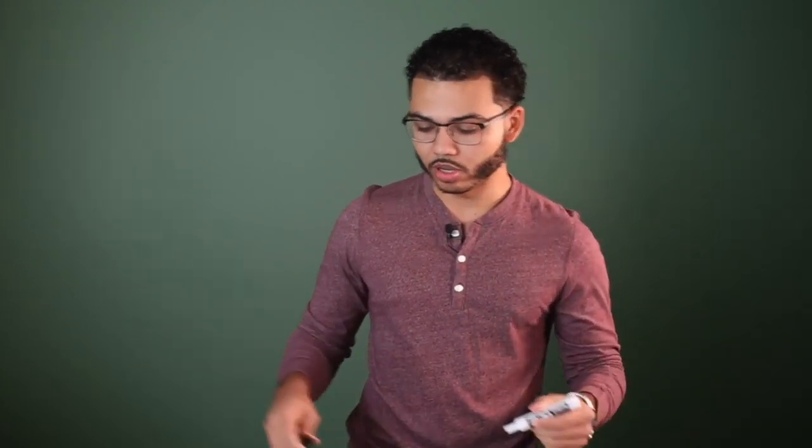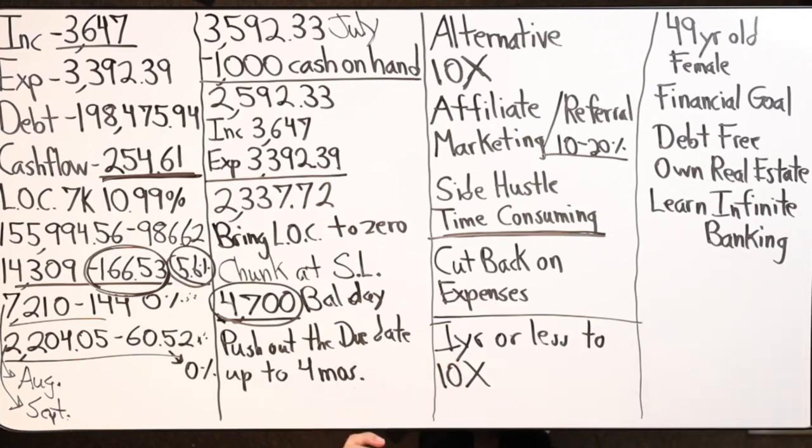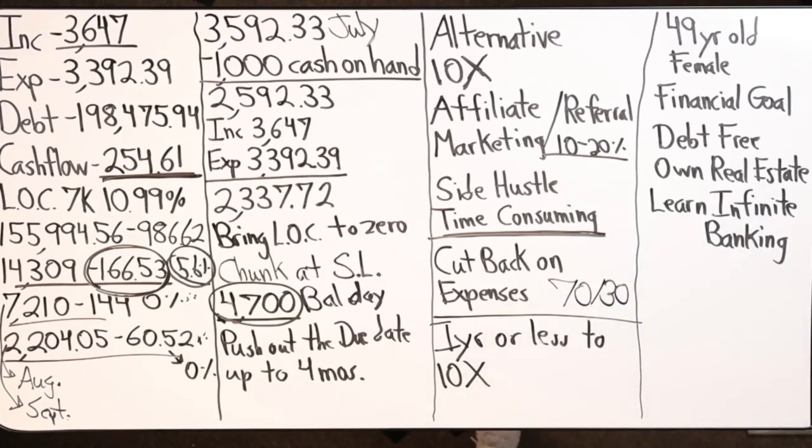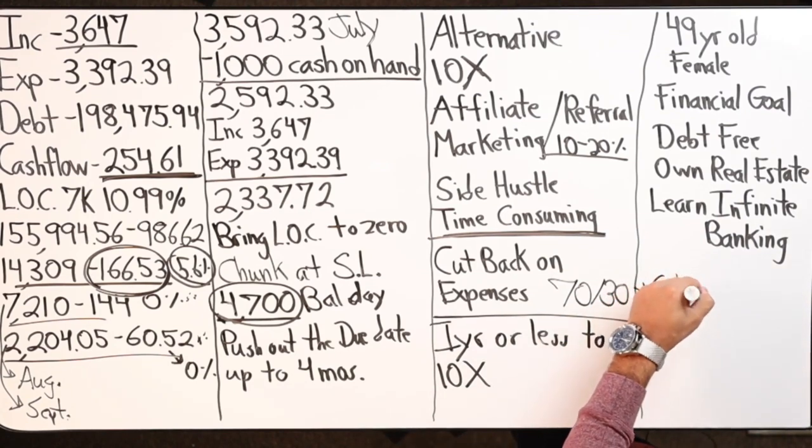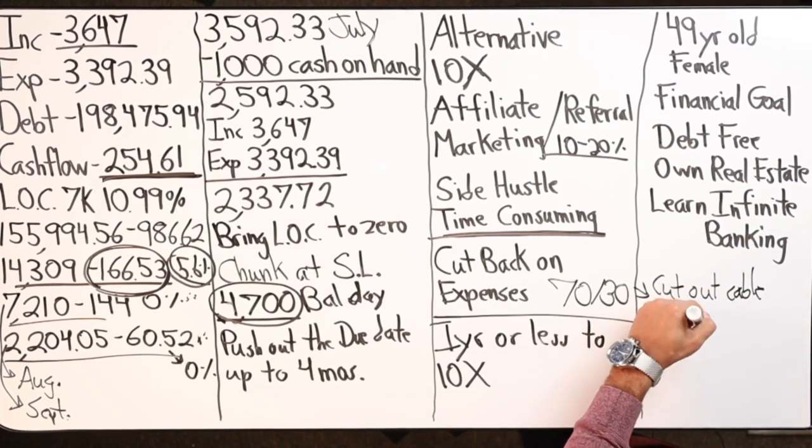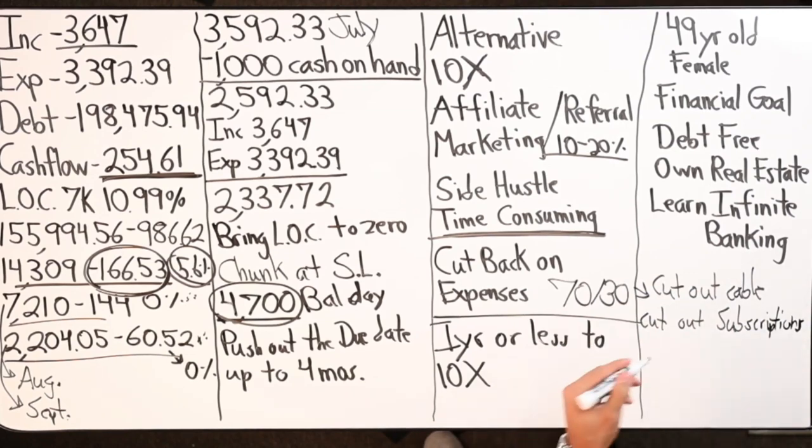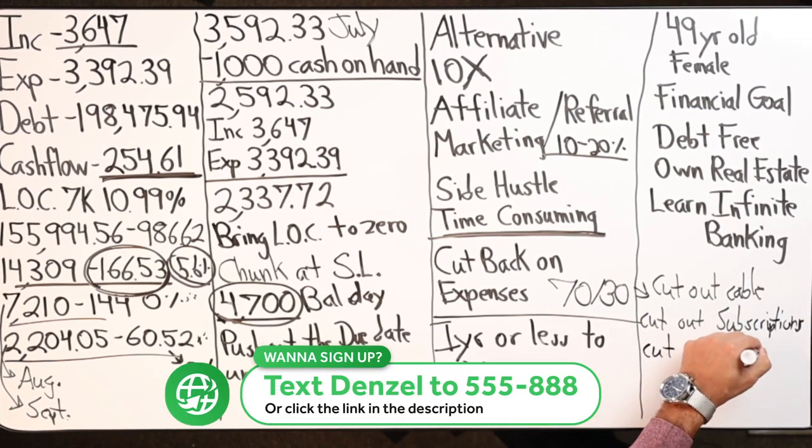And then the last thing is cut back on expenses. Is it possible for you to live on 70% of your income for the next six to nine months? Can you give me six to nine months to live on 70% of what you make so I can have an additional 10% to 20%, almost 30% in cash flow to work with so that we can pay off debt a lot faster? So doing the 70-30 rule, is that a possibility? Give me six months. Can we cut out cable? Can we cut out subscriptions? Can we cut out eating outside?